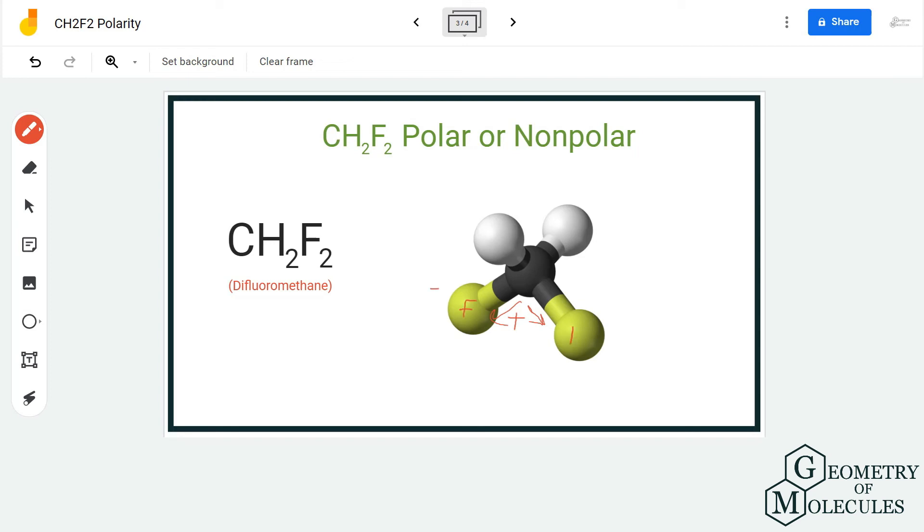This makes the region around fluorine atoms have partial negative charges and the regions around hydrogen atoms have partial positive charges. So as there are poles formed in this molecule, CH2F2 is a polar molecule. I hope this video helps you to understand the polarity of CH2F2.